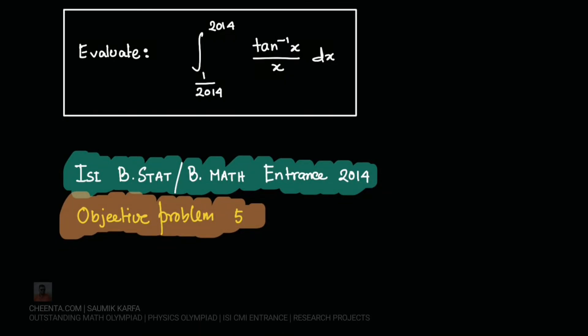Objective problem number 5 of ISI BSTAT and BMATH entrance 2014. This problem is asking us to evaluate the integral of tan inverse x over x dx within the limit 1 over 2014 to 2014. So this is a problem of definite integral.